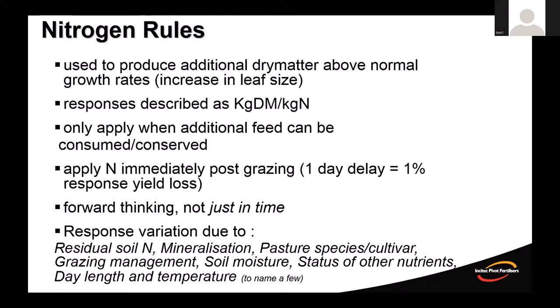Nitrogen rules: we only use it to produce additional dry matter above normal growth rates. All nitrogen does is increase leaf size, giving you more dry matter — an N-deficient leaf will be small and pale. We describe dry matter responses as kilograms of dry matter per kilogram of N applied. With urea at $1,500–$1,700 per tonne, we need to make sure the value of the response is at the top end. We only apply nitrogen when we can consume or conserve the feed, since under-utilising additional grown feed becomes very costly.